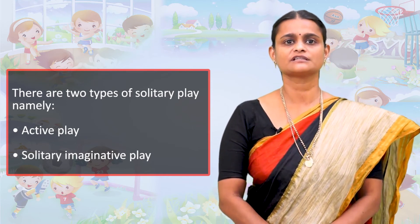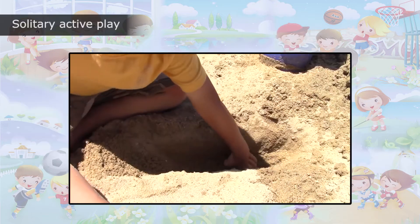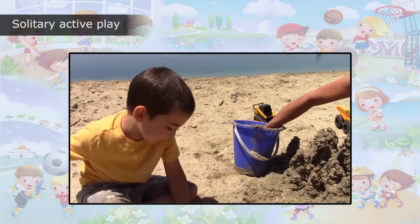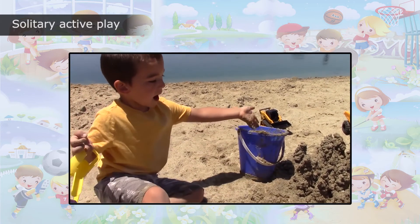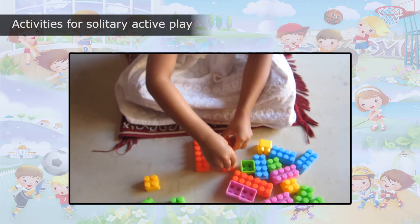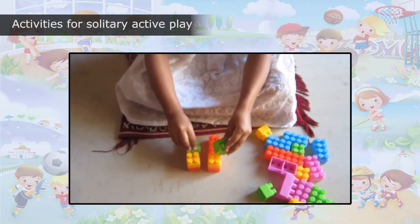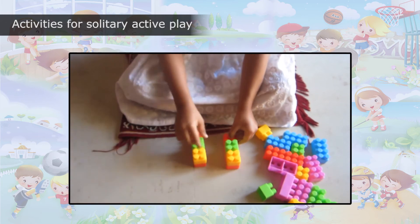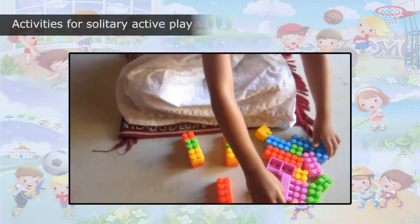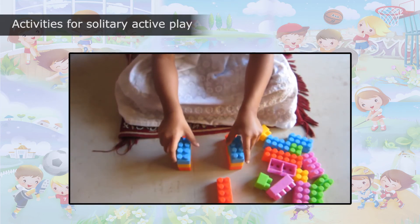Solitary active play includes repeated simple movements with or without a toy. For example, a child playing on a beach, filling sand into a bucket and undoing it repeatedly for a long period of time. Activities for solitary active play include certain toys that can keep the child engaged, such as blocks, electronic cars, bouncing balls, manual toy cars or bicycles, which allow the child to release their energy and keep them busy for a certain time.